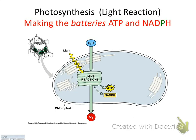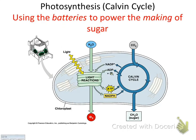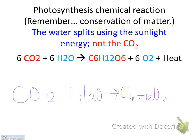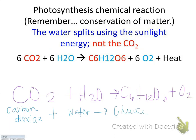The light reaction takes in sunlight and water, releases oxygen, and makes ATP and NADPH. The Calvin cycle uses CO2 to make sugar. Here's your chemical equation — write this in: CO2 + H2O yields C6H12O6 plus oxygen. Underneath that, write the words: carbon dioxide plus water yields glucose plus oxygen.